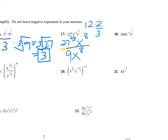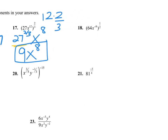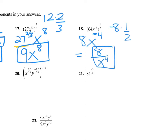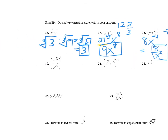Number 18: 64 to the 1/2 means the square root of 64, which is 8. Then x to the negative 8 — multiply the exponents to get x to the negative 4th. We are not allowed to leave negative exponents in our answers. So 8 stays put, but the x to the 4th moves to the bottom and becomes positive.